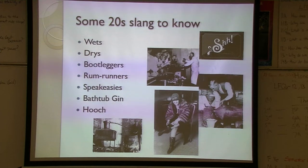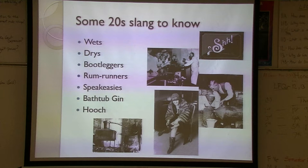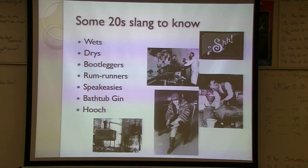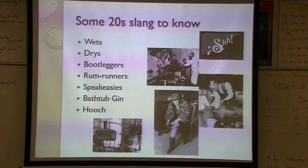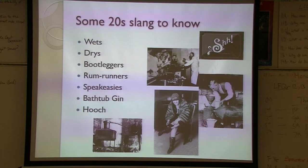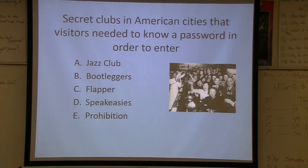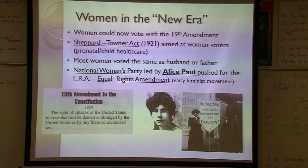Some slang to know from this era: 'wets' were people for alcohol, 'dries' were against it — there are still dry counties in the mountains of North Carolina, Virginia, and West Virginia today. Bootleggers illegally transported alcohol, named for hiding bottles in their boots. Rum runners used boats — in Florida, the Bahamas and Jamaica were close enough for rum transport by boat. A speakeasy was a secret bar; bathtub gin was homemade alcohol; hooch was another term for illegal alcohol.